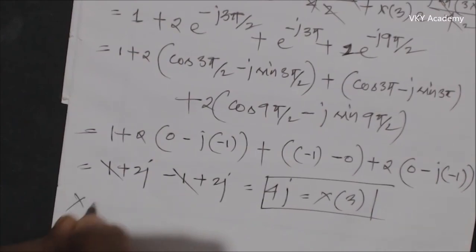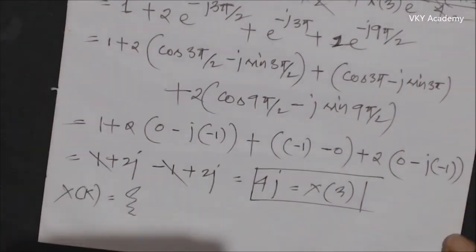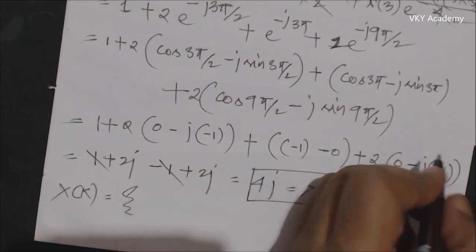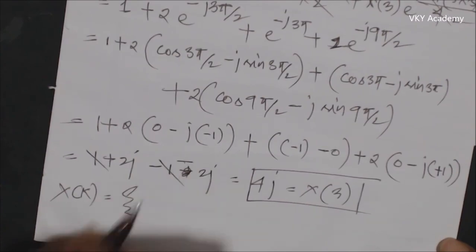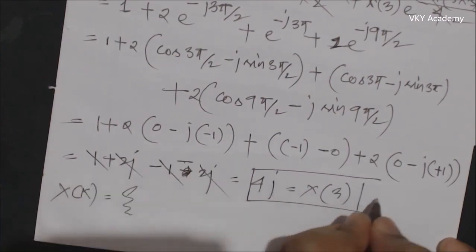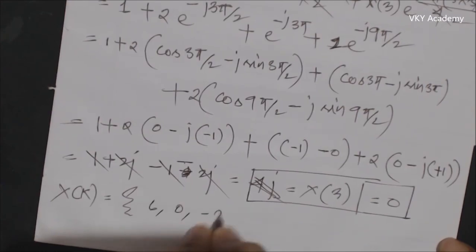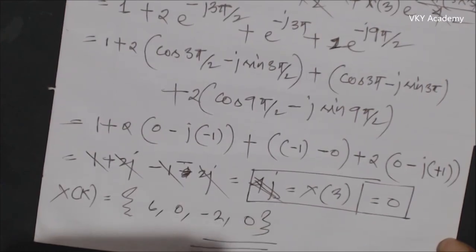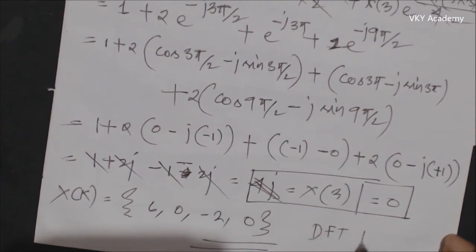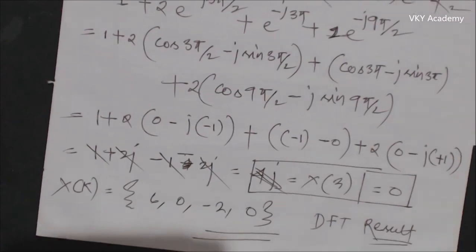Correcting the sign: sin 9pi/2 equals plus 1, so the last term is minus 2j, and everything cancels to give X[3] = 0. So the final DFT result X[k] is: X[0] = 6, X[1] = 0, X[2] = minus 2, X[3] = 0. In the next class we will compute the 4-point IDFT or inverse discrete Fourier transform for given frequency samples. Thank you.